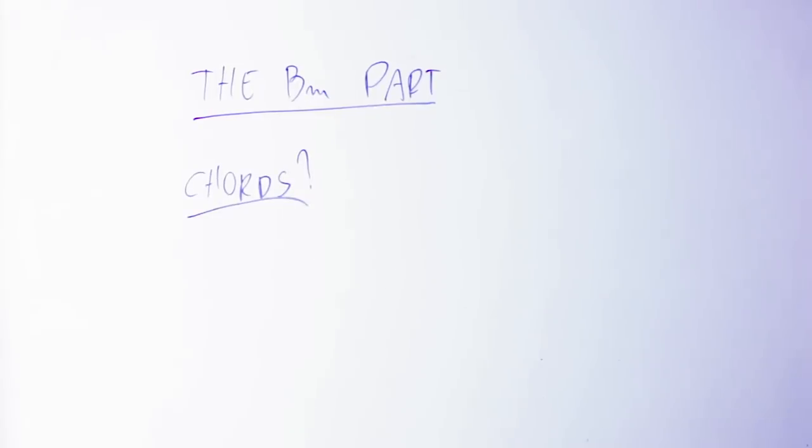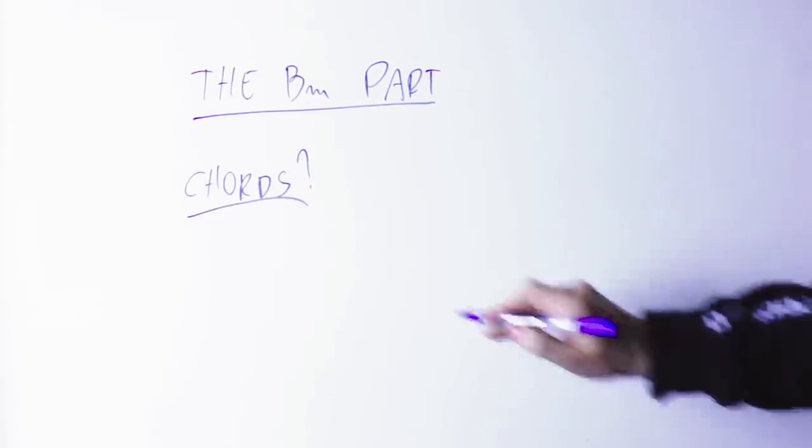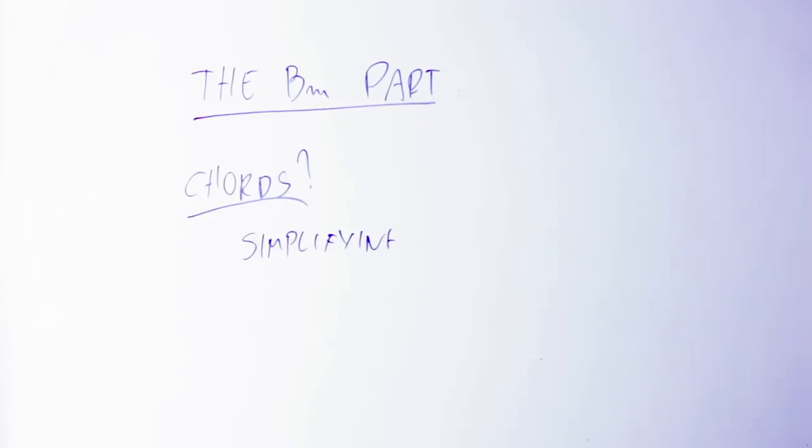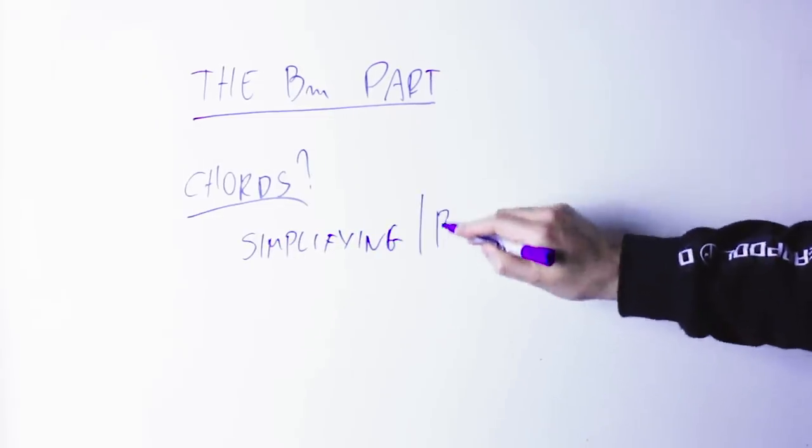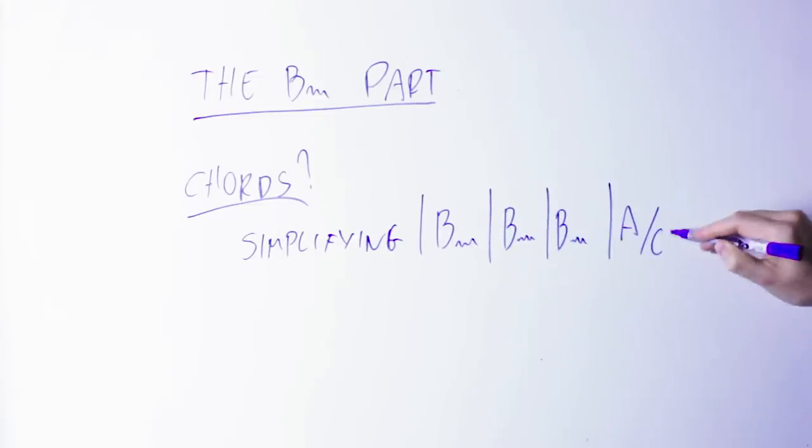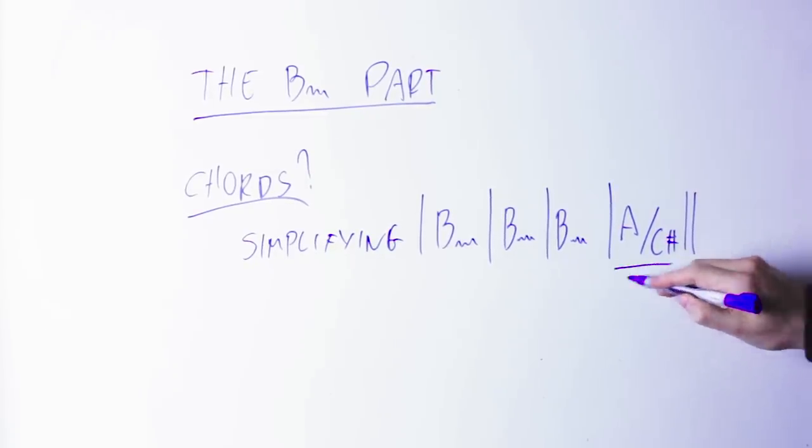Now we could stay here for a long time discussing the exact name of those chords but essentially the harmonic meaning of those chords is three bars of B minor and one bar of A with a bass of C. The important thing here is that we are in the key of B minor and then the last chord is an A chord.